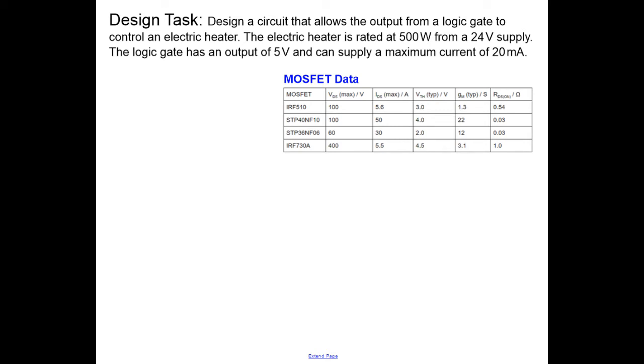Here is another design problem. We've got to design a circuit that allows an output from a logic gate to control an electric heater. The electric heater is rated at 500 watts from a 24 volt supply, so that's a fairly significant amount of power from a fairly low voltage. The logic gate has an output of 5 volts and can supply a maximum of 20 milliamps.